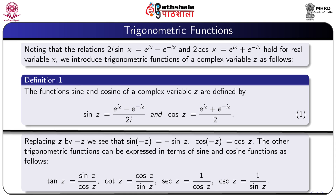If we replace z by minus z, we see that sin(-z) = -sin z and cos(-z) = cos z. The other trigonometric functions can be expressed in terms of sin and cosine as: tan z = sin z / cos z, cot z = cos z / sin z, sec z = 1 / cos z, and cosec z = 1 / sin z.